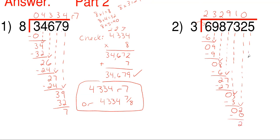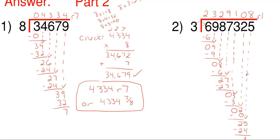And then I'm going to drop my last number, which is 5, so I'm left with 25 here. How many times does 3 go into 25? 3 goes into 25 eight times without going over, because 8 times 3 gives me 24. And I'm left with a remainder of 1, because I have no more numbers to drop. Whatever's left at the bottom is my remainder — little r, 1.